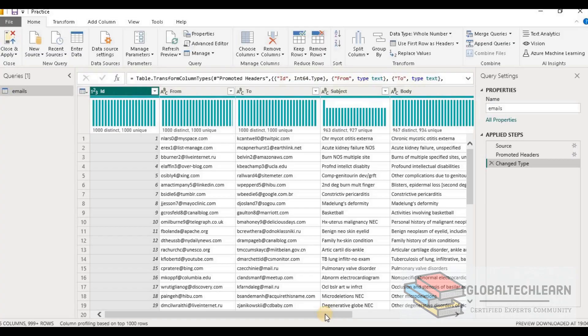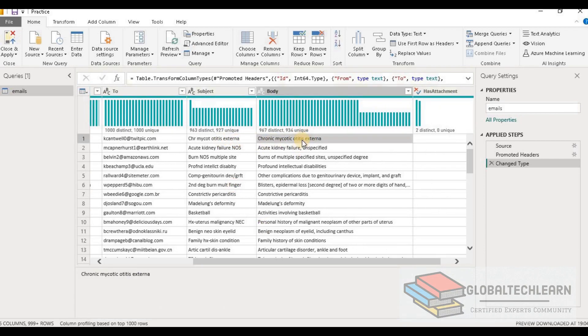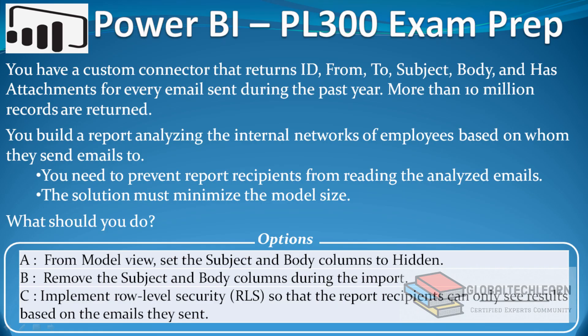Let's go back to the Power BI desktop. Here we can see the 'from' and 'to' columns are the critical fields required for the analysis of internal email networks. The subject and body fields are the ones we need to prevent users from accessing. The first option is, from model view, set the subject and body columns to hidden. By hiding these two columns, we can achieve the first and second requirements. However, this will not fulfill the third requirement — minimizing the model size — because we are only hiding the fields, but the underlying data within those fields will still remain within the file.